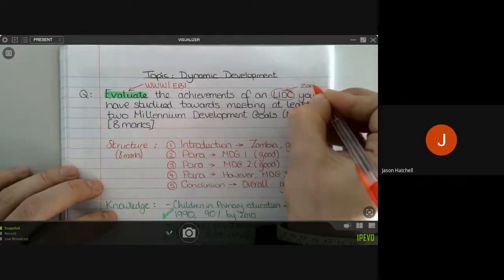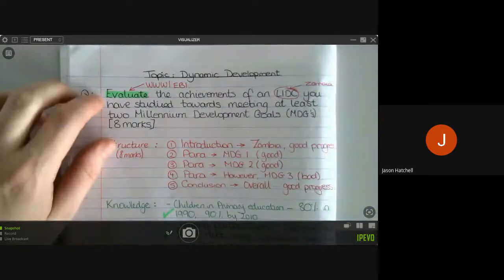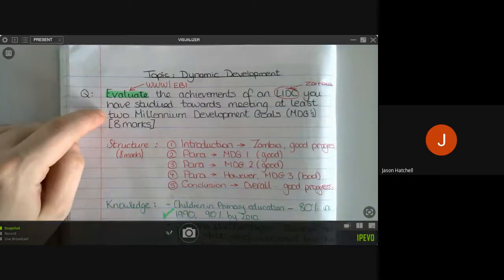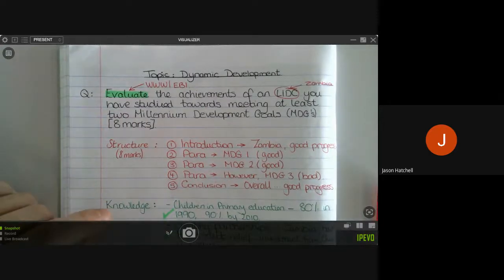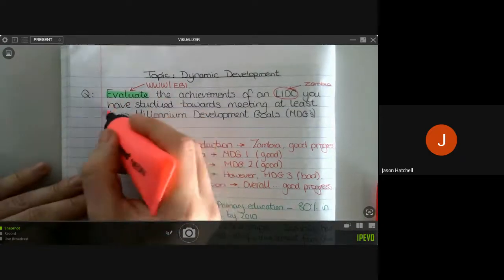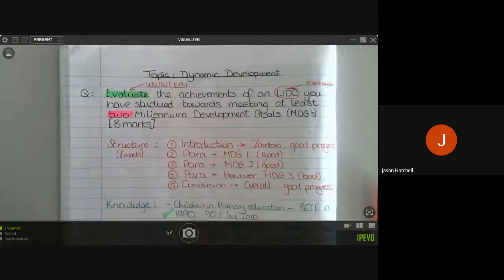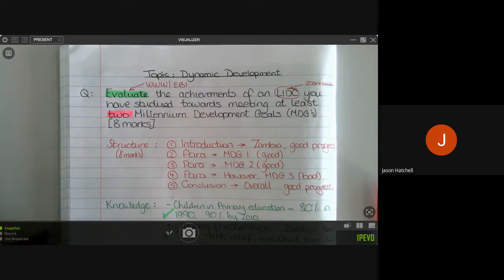So we are asked to look at Zambia, think about the achievements it has had and also the potential problems it still has in at least two of the Millennium Development Goals. So with this question, it is actually easier to do three, so that is the way I am going to do this. You can do two; however, I am going to use three in this example.